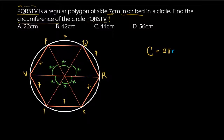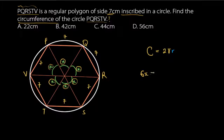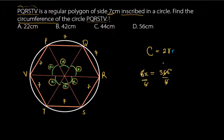Adding up the six equal angles: x + x + x + x + x + x = 6x, and 6x must equal 360 degrees. Dividing both sides by 6 gives x equals 60 degrees. So each central angle is 60 degrees.